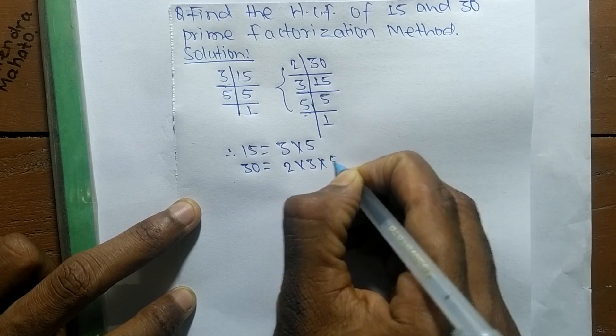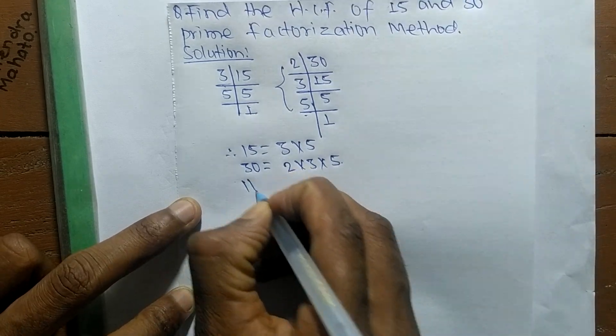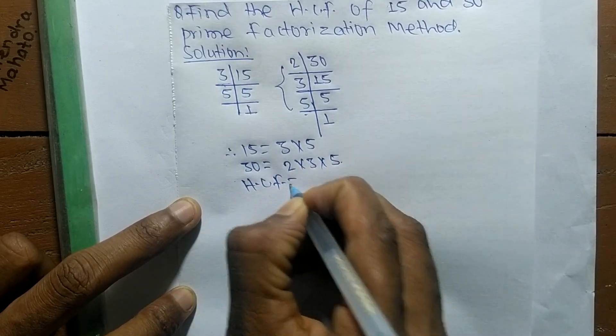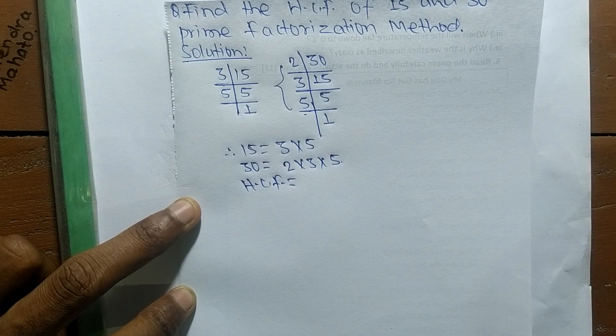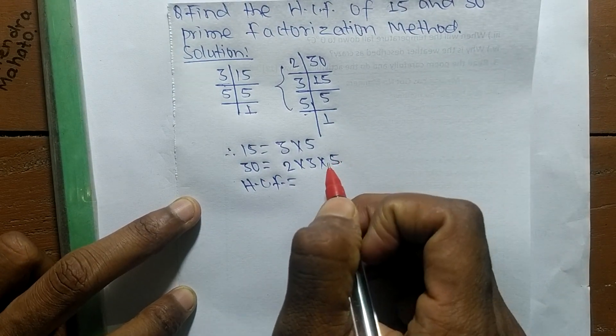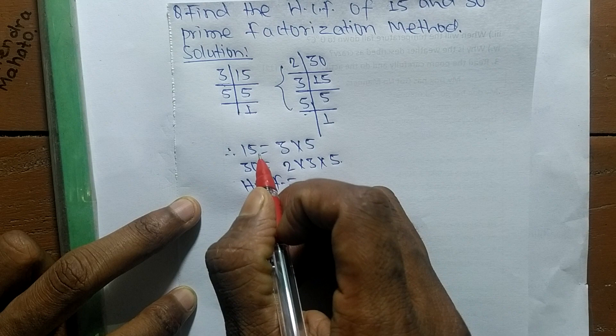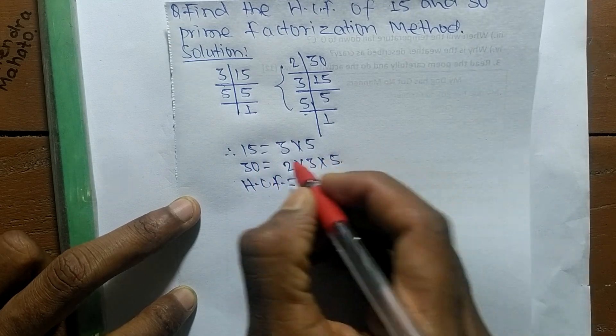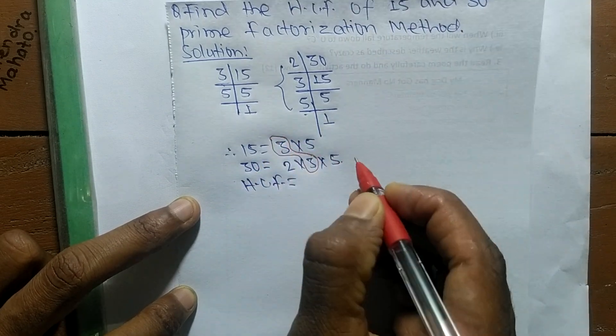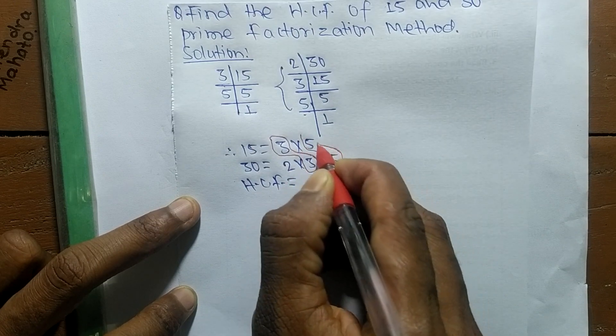To find the HCF, we need to find the common factors in the prime factors of 15 and 30. The first common factor is 3, and the second one is 5.